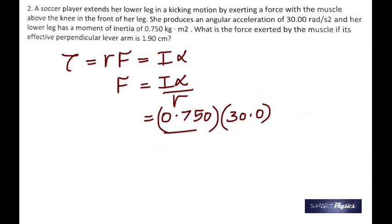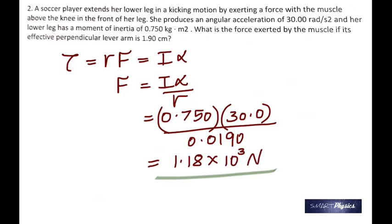One is the perpendicular distance multiplied by the force, and the other is moment of inertia times angular acceleration. I put them together, make F the subject. That's I, alpha, and the radius. The radius is in centimeters, so I've changed it into meters here by dividing by 100. And you get that as 1.18 times 10^3 newtons. That's a huge force. It definitely is.